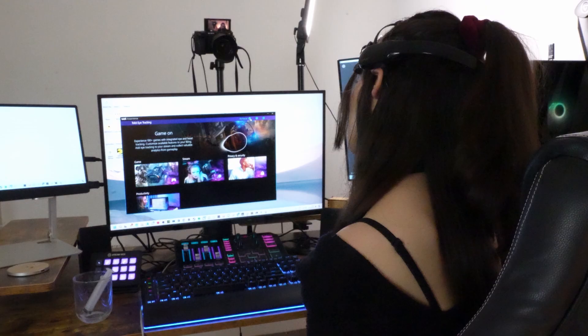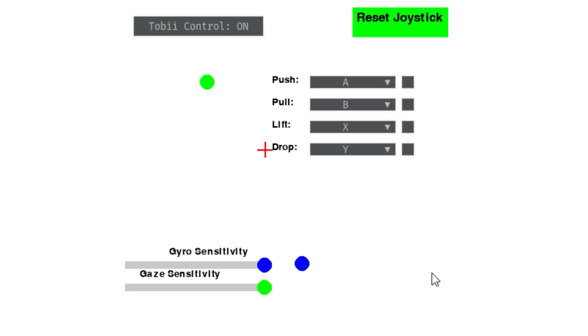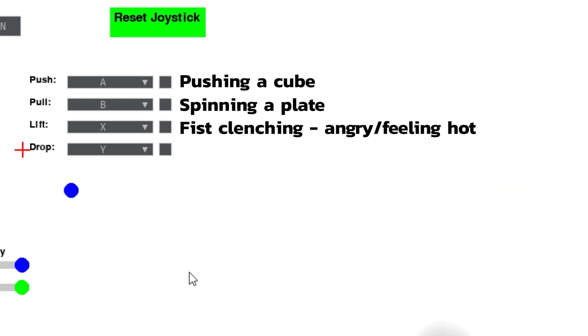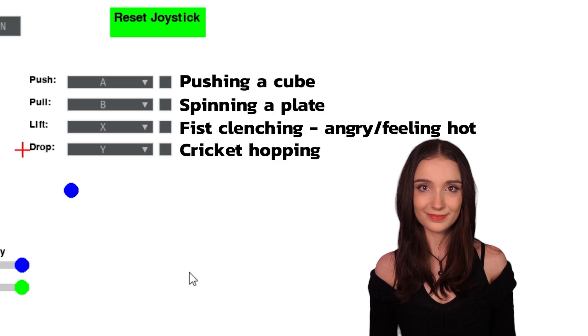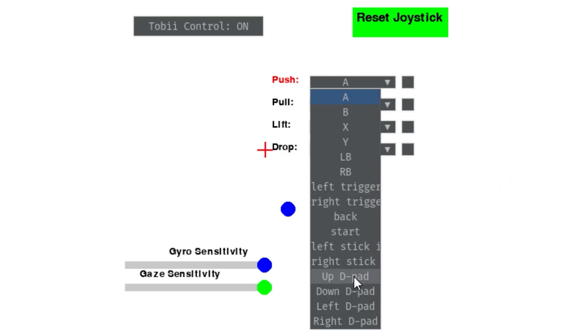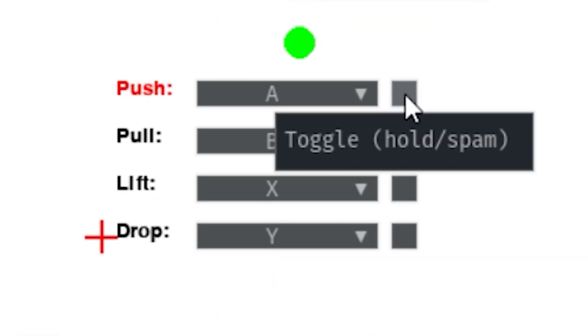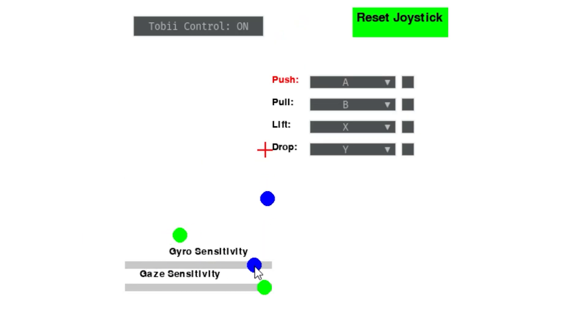So I decided to wipe the whole slate clean and start training mental commands from scratch to see how good I could make this. Could it be a usable game controller? Here was the final plan: eye tracking and gyro for virtual joysticks, and four mental commands for virtual buttons — pushing a cube, spinning a plate, imagining my fist clenching while angry and feeling hot, and a little cricket hopping while I pulsed muscles in my face. I also added a drop-down menu for each of these so I could make them press any button I wanted at any time, an option to toggle to spam or hold the buttons, and some sensitivity sliders for the eye tracker.